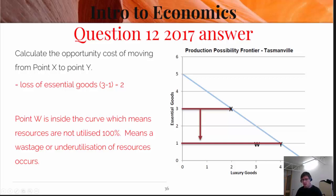In relation to point W, that's inside the curve, which means that resources are not being utilised at their maximum. That implies a waste of resources and underutilisation of resources. You can give examples such as labour not being applied all the time, or in relation to capital resources, they're not being used 100% of the time — maybe there's lack of demand and utilisation rates are down.